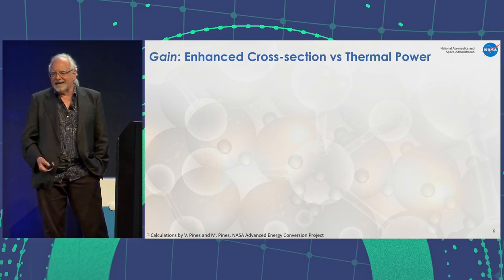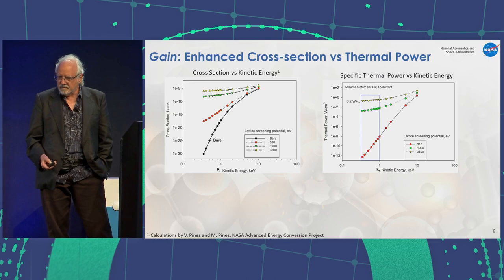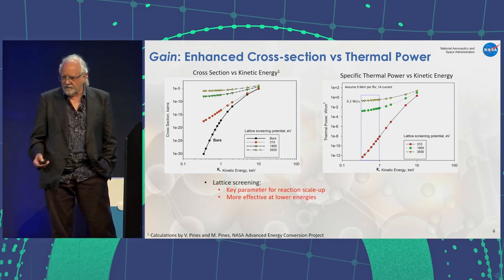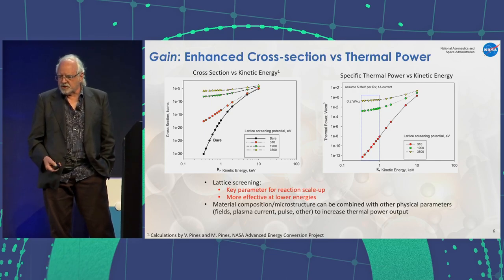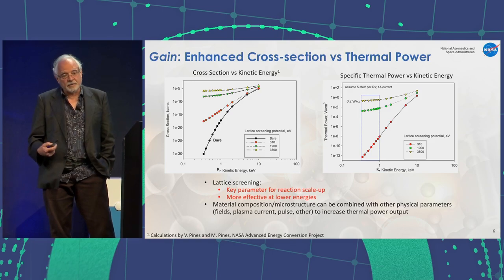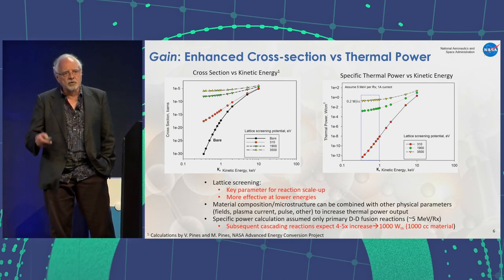We can look at this in terms of gain, looking at enhanced cross-section versus thermal power, running in this case all the way up to 3.5 kilovolts. The specific thermal power versus kinetic energy shows that it will increase as well. Lattice screening is the key parameter for reaction scale-up—it's more effective at lower energies. Material composition, microstructures, external fields, maintaining a plasma current, and pulsing can all increase the thermal output. If we can get a cascading set of reactions, we initially did calculations assuming one set of reactions, not cascading and inducing additional reactions.